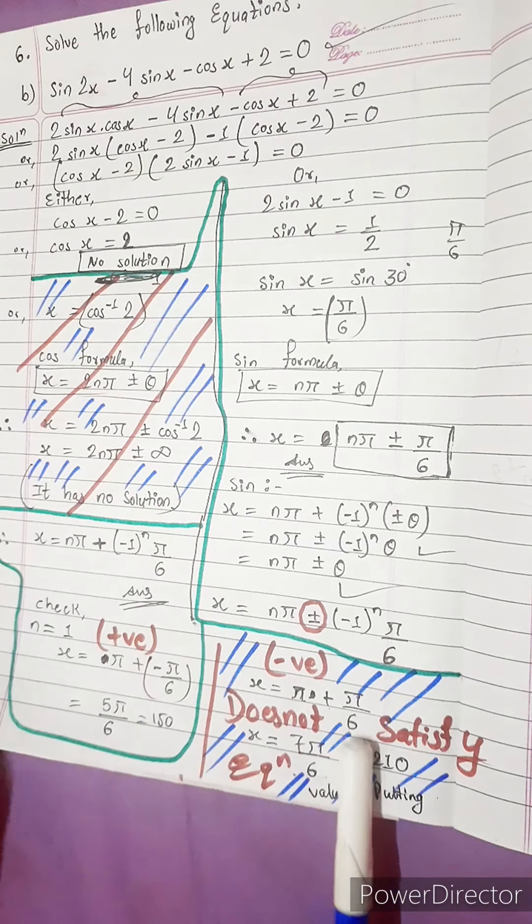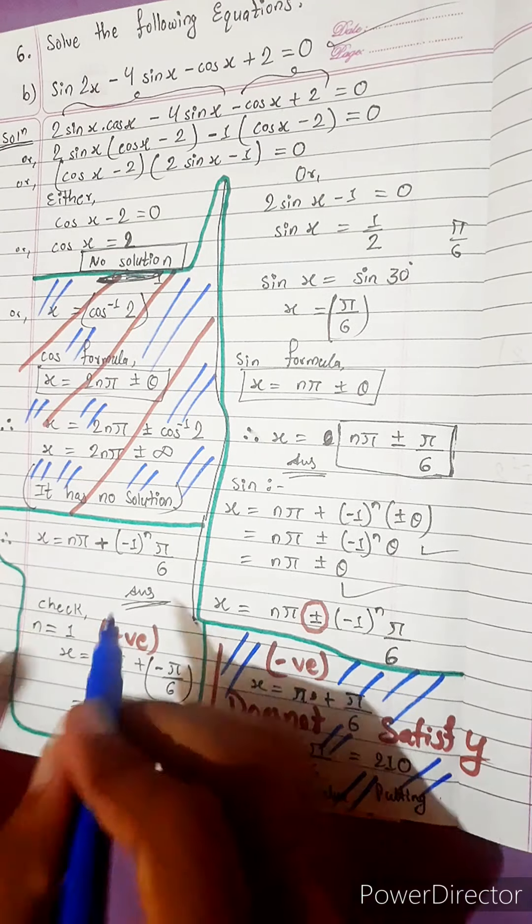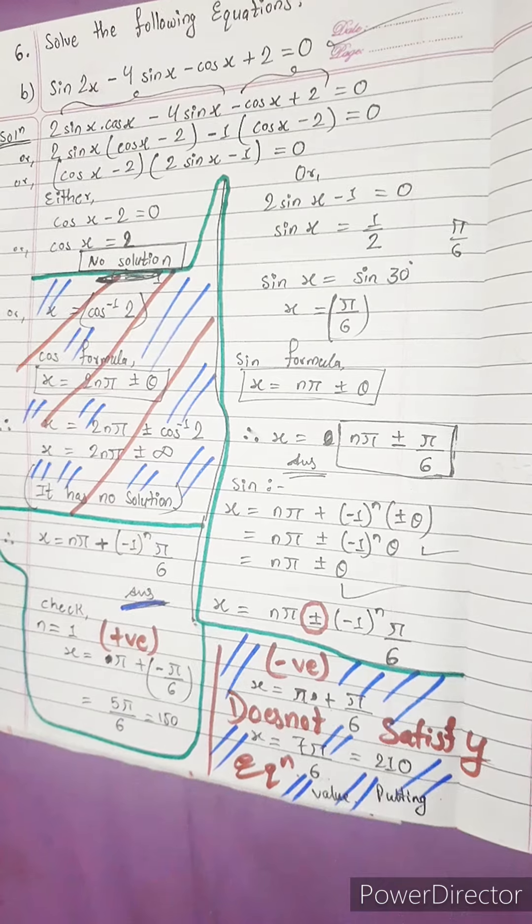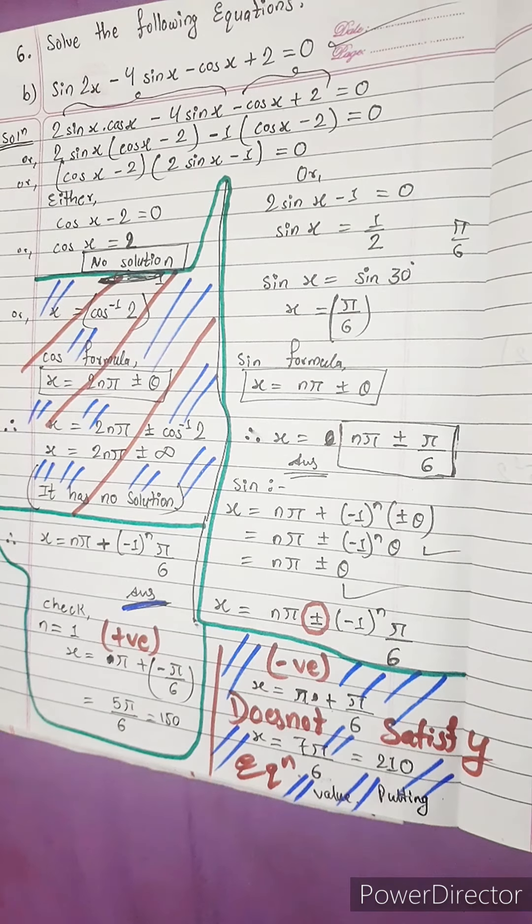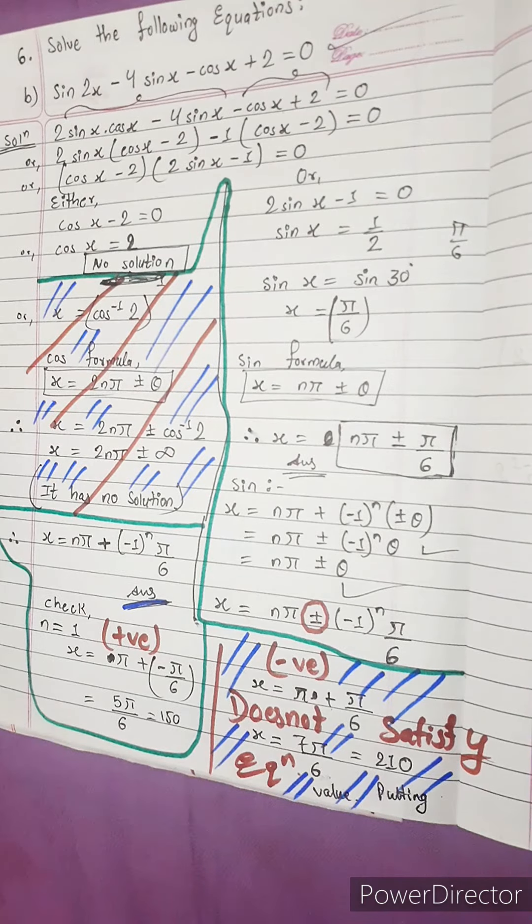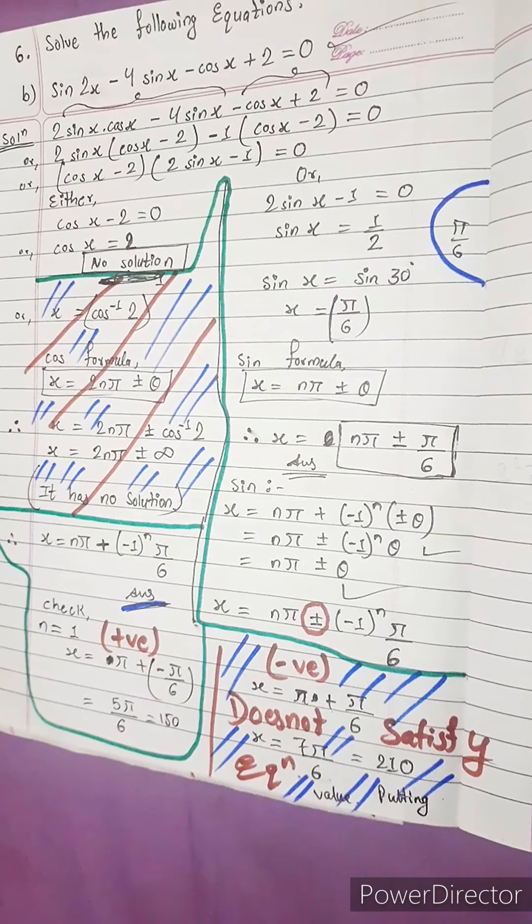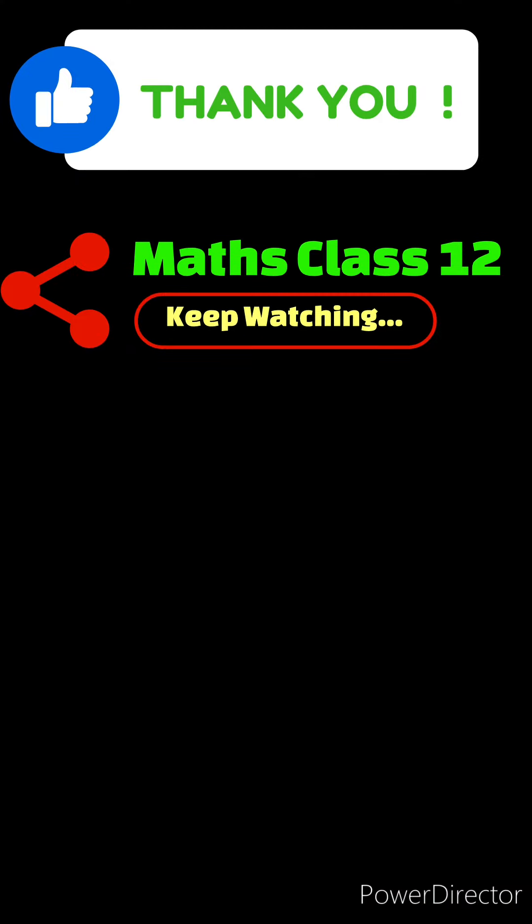So write down only this green part, don't write this blue part. This is no need to do, just for understanding I did this. This is our required answer. I think you are very clear. This is not so difficult. Time to do next question. Goodbye.